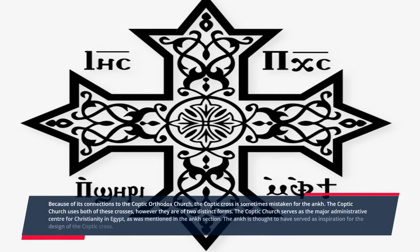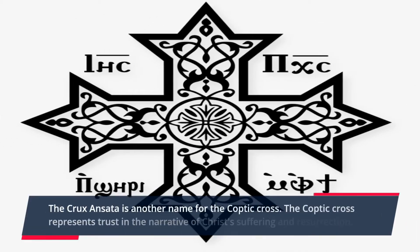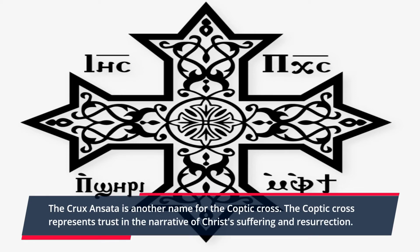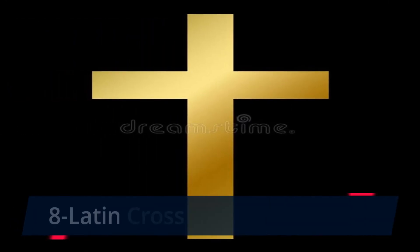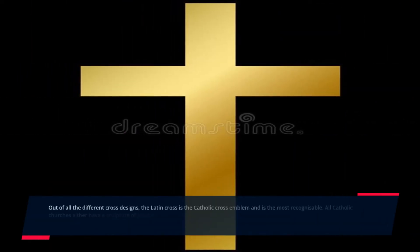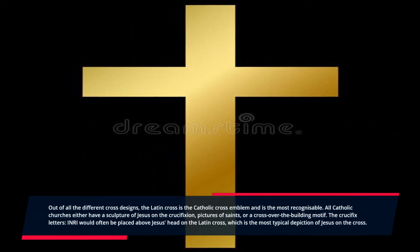Number seven: the Coptic Cross. Because of its connections to the Coptic Orthodox Church, the Coptic Cross is sometimes mistaken for the Ankh. The Coptic Church uses both crosses, but they are of two distinct forms. The Coptic Church serves as the major administrative center for Christianity in Egypt. The Ankh is thought to have served as inspiration for the design of the Coptic Cross, also known as the Crux Ansata. The Coptic Cross represents trust in the narrative of Christ's suffering and resurrection.